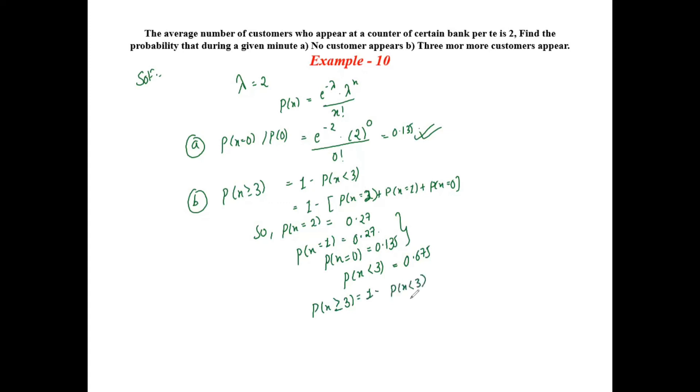That is 1 minus 0.675, and that is equal to 0.325. Hence, the probability that no customer appears is 0.135, and the probability that three or more customers appear is 0.325. So hence we have completed our Example Number 10 as well.